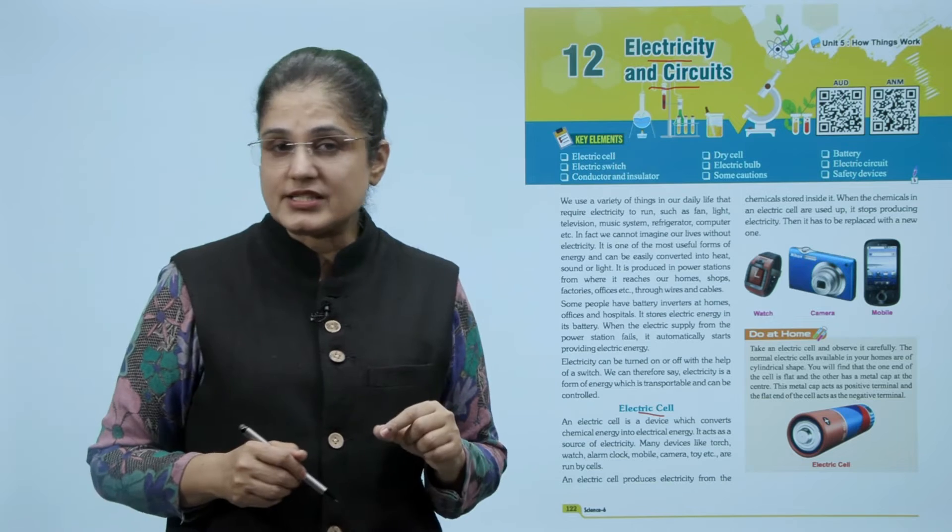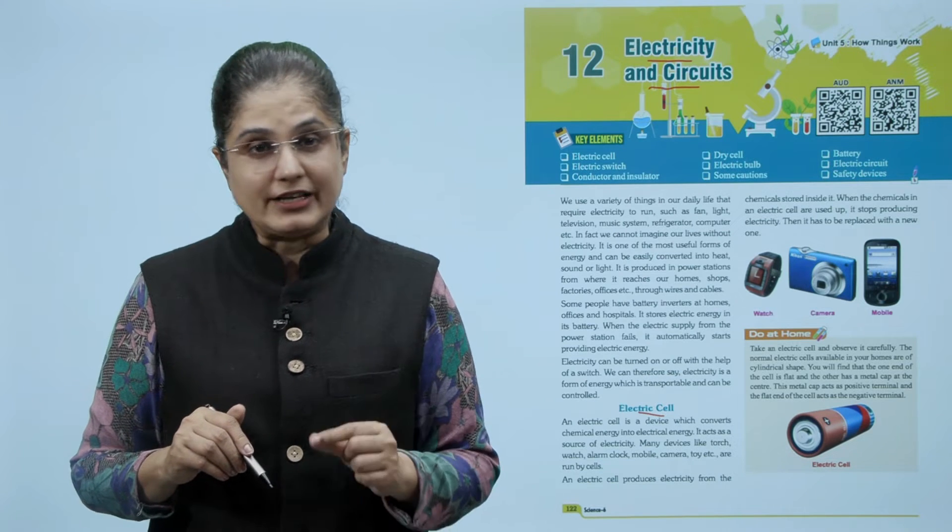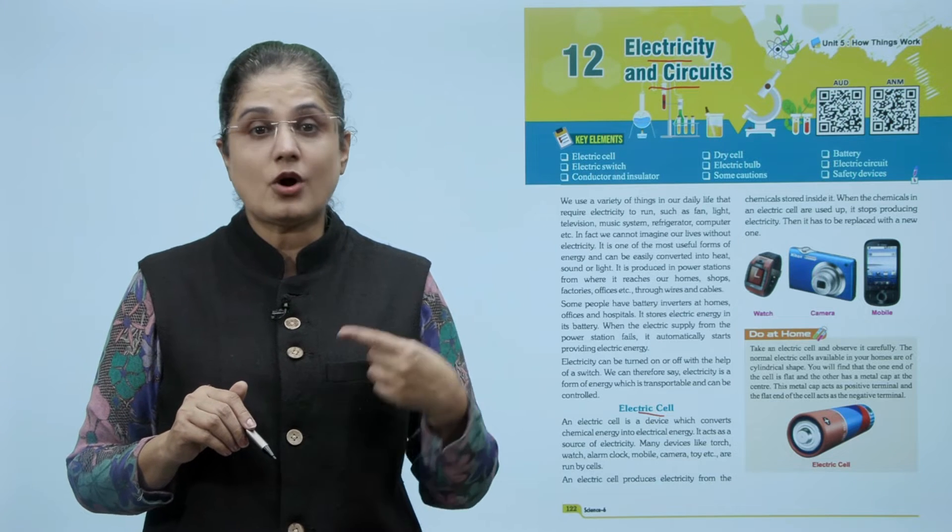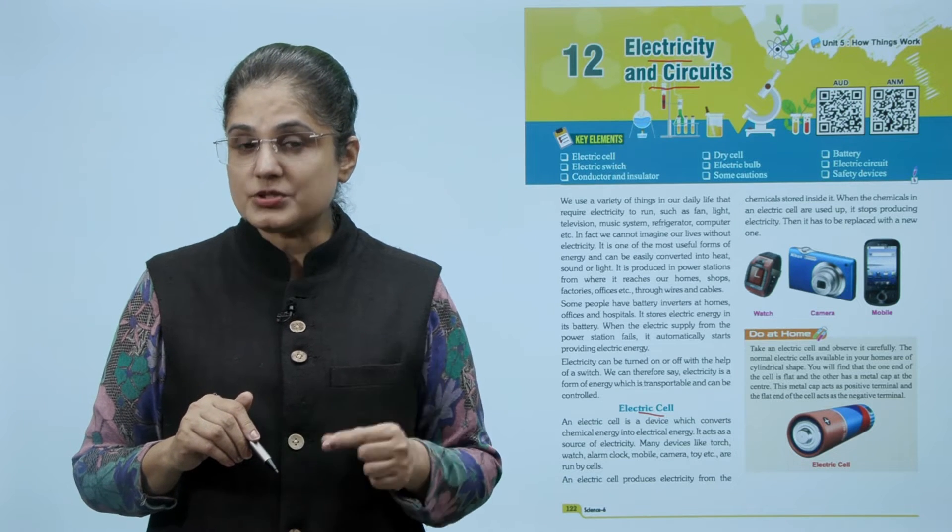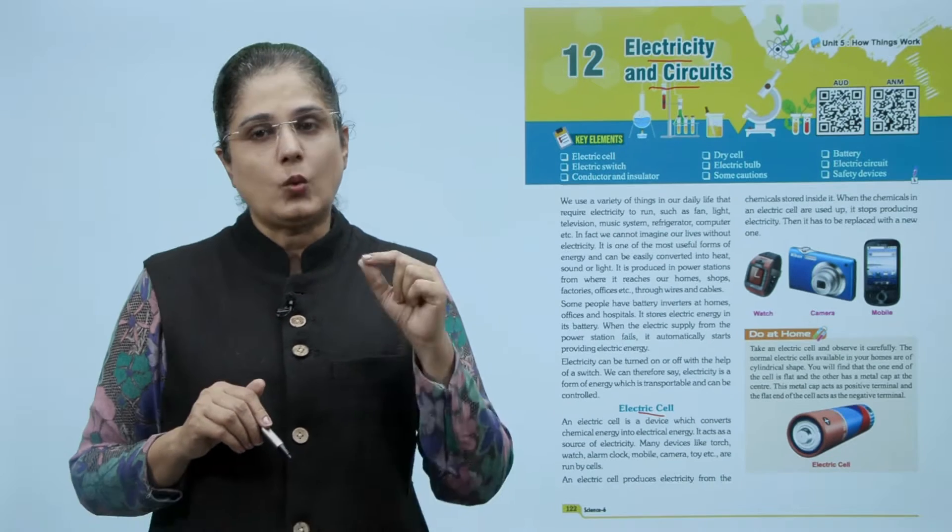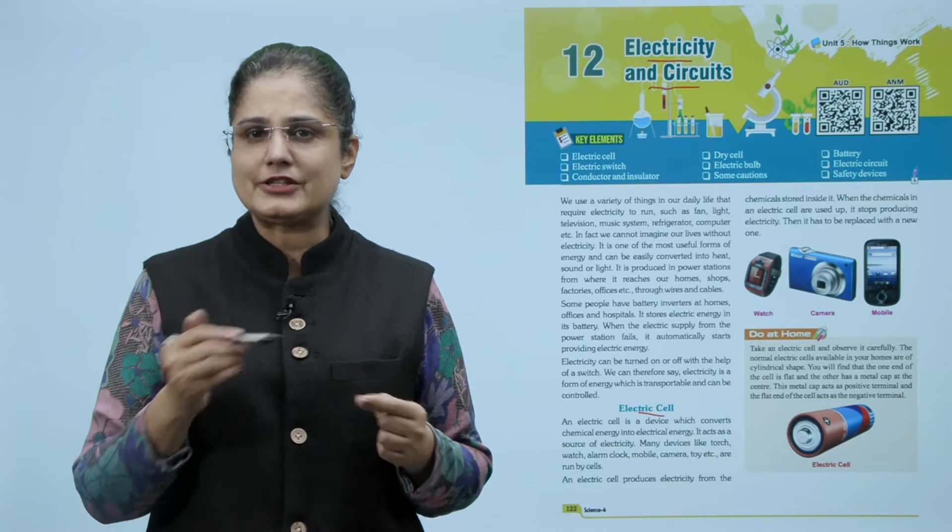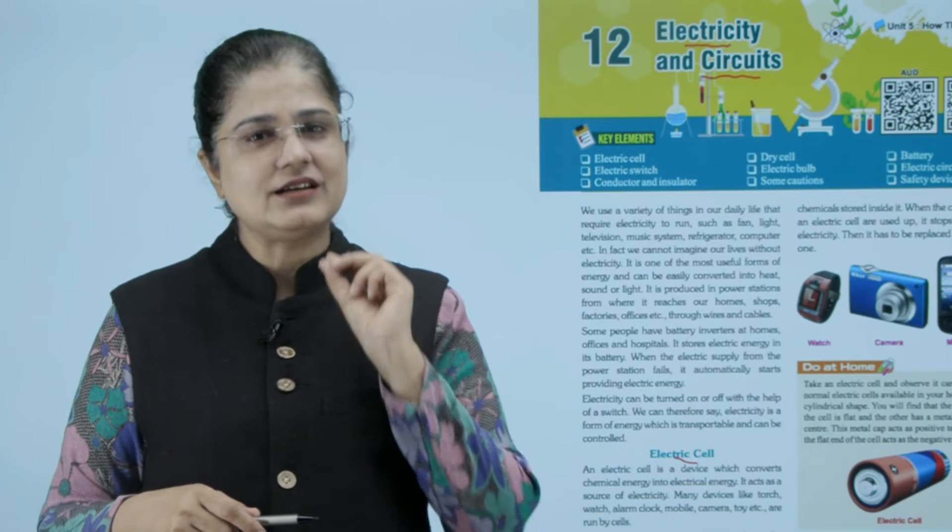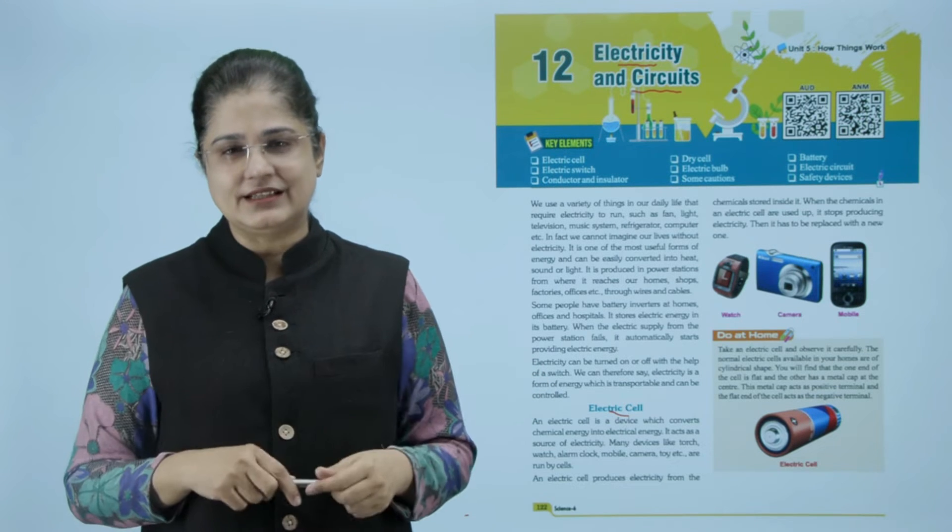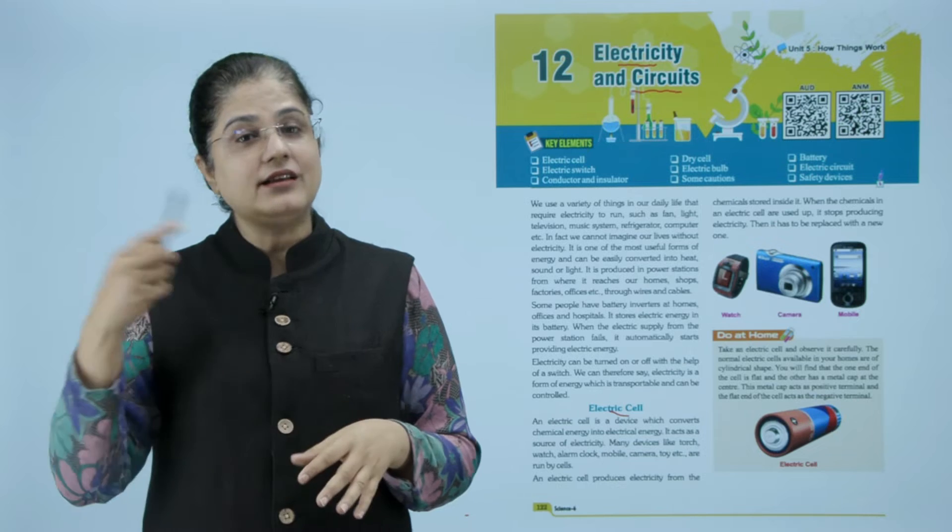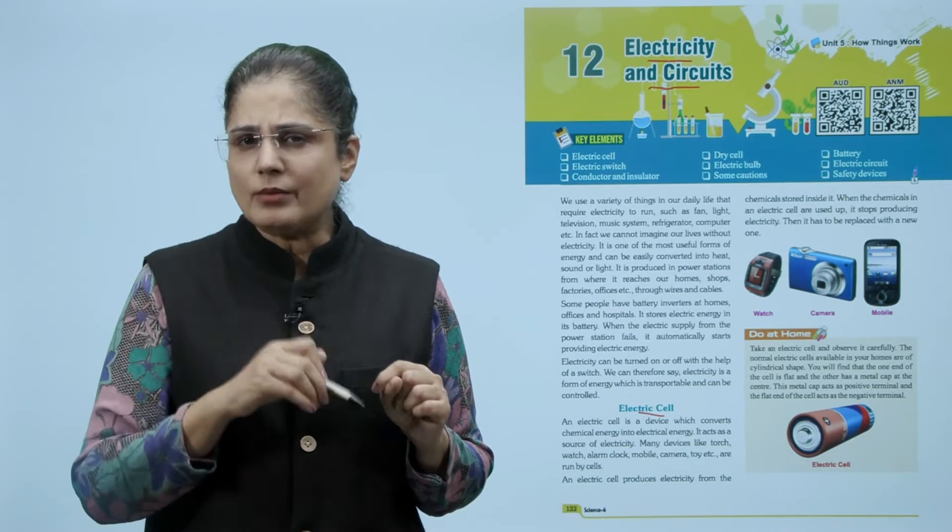So we will begin with the electric cell. Now an electric cell is a device which converts chemical energy into electrical energy. It acts as a source of electricity. Many devices like torch, watch, alarm clock, mobile, camera, toy are run by cells. An electric cell produces electricity from the chemical stored inside it. When the chemical in an electric cell are used up, it stops producing electricity and has to be replaced with a new one. Electric cell एक ऐसा device है जो chemical energy को electrical energy में convert करते हैं और ये हमारे torch, घड़ी, alarm clock, mobile हर जगह use होती है।